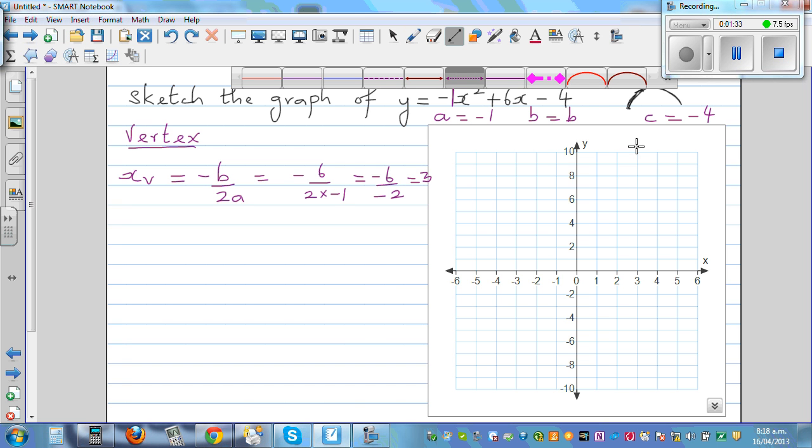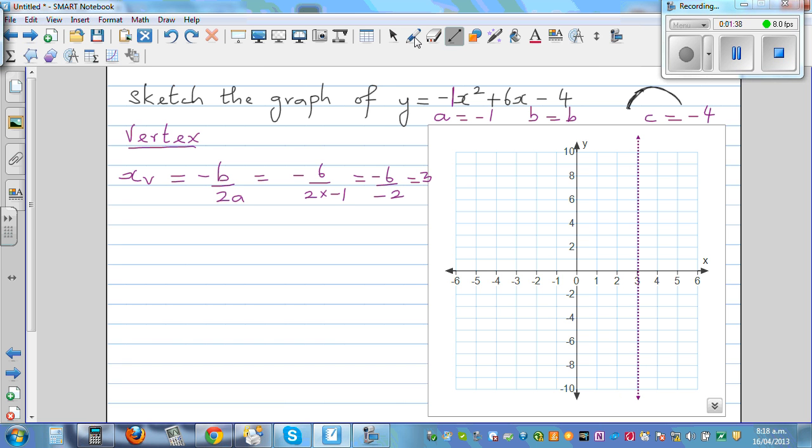You can draw the line of symmetry first. This is your line x equals 3. Now we need to find the y-coordinate. yv would be found by putting this back in the equation.